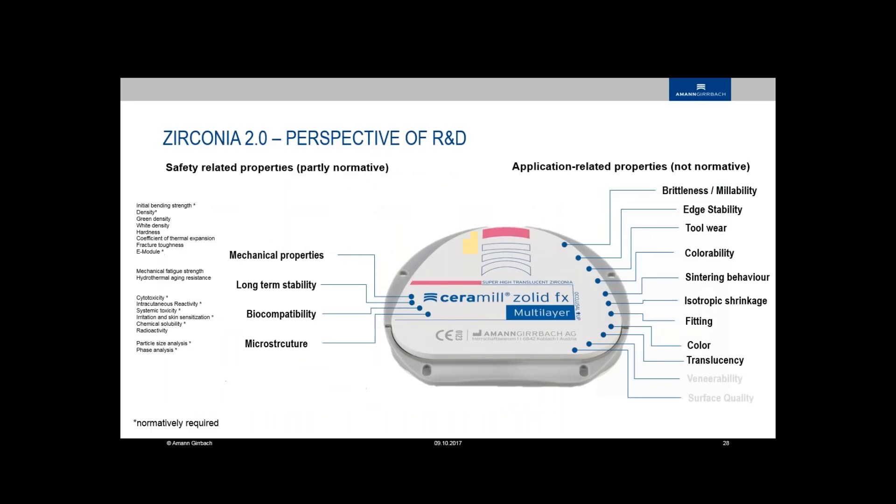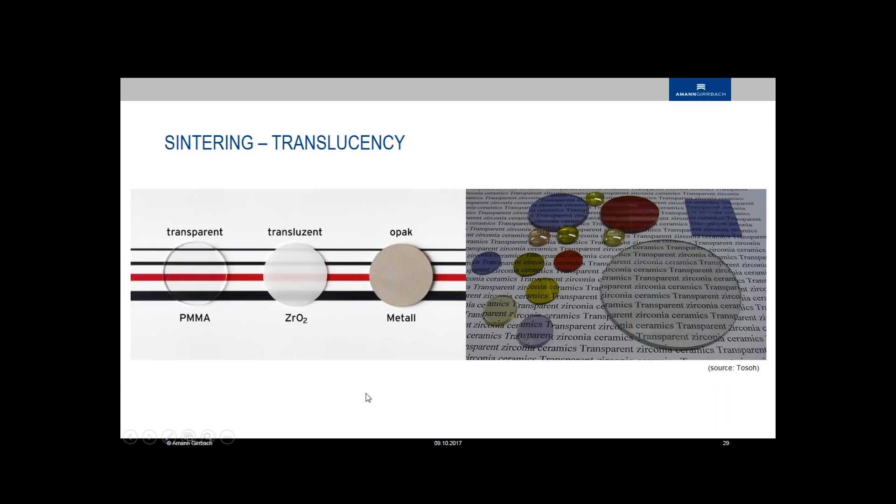Translucency. Translucency is also very interesting when you compare different materials like PMMA or zirconia or metal. It's clear this is transparent, this is translucent and this is opaque. But you also can make really full transparent zirconia. You can see here pure cubic zirconia, also with doping with colors. It's like window glass. We have to find the right composition between the translucency, transparent and opaque. This is done by the blanks, by the doping of the blanks with the yttria.